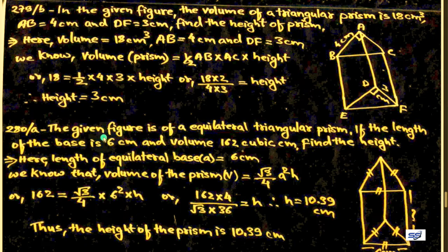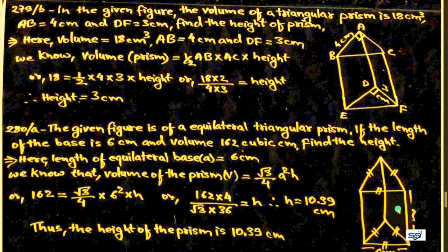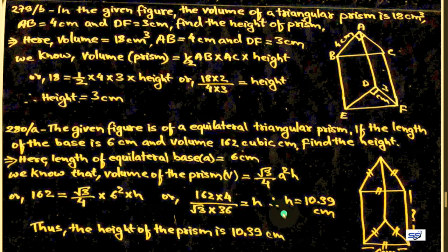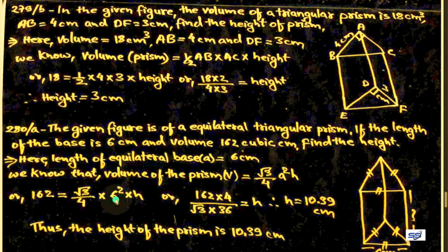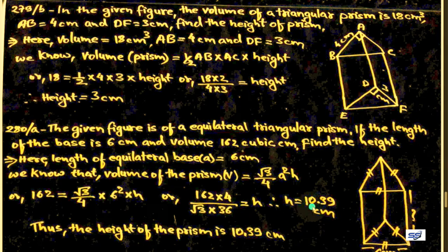Question 280a: equilateral triangular prism with base length a = 6 cm and volume = 162 cubic cm. Find the height. Volume = root 3 upon 4 times a squared times h = 162. So height = 162 into 4 upon (root 3 into 36) = 10.39 cm. Thus height of prism is 10.39 cm.